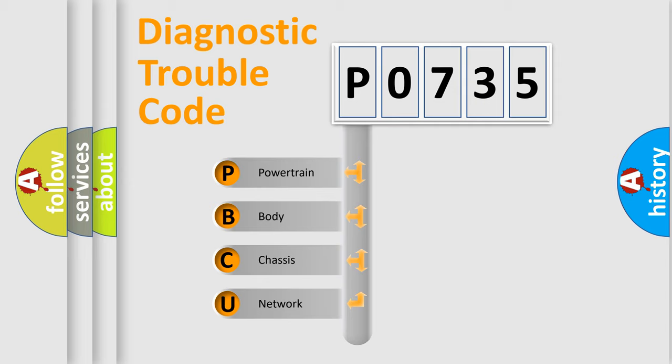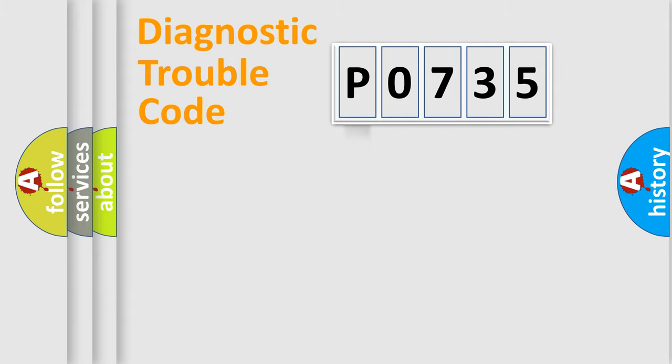We divide the electric system of automobile into four basic units: Powertrain, Body, Chassis, Network. This distribution is defined in the first character code.